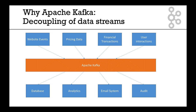There is a middle layer, Apache Kafka, which allows you to decouple your data streams. Your website events only worry about pushing data to Apache Kafka, and that's it. And for your database, it can just source any data from any source, just from Apache Kafka. That's a very, very strong concept.